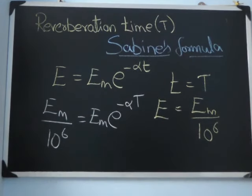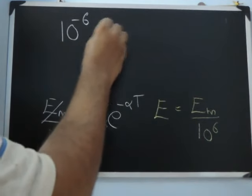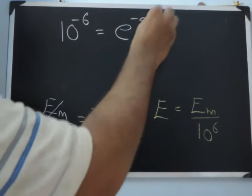That is the reverberation time. We can cancel this Em here. 10 power minus 6 equals e power minus alpha T.